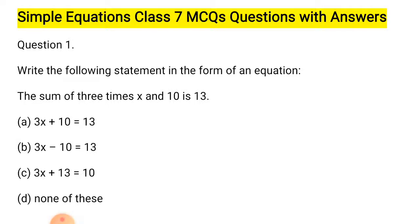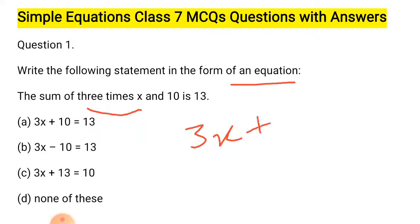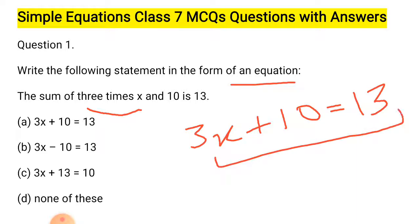Write the following statement in the form of an equation: Sum of 3 times x and 10 is 13. So, 3 times x is 3x, and we have to sum 3x and 10, which is equal to 13. So, 3x + 10 = 13 is the correct answer.